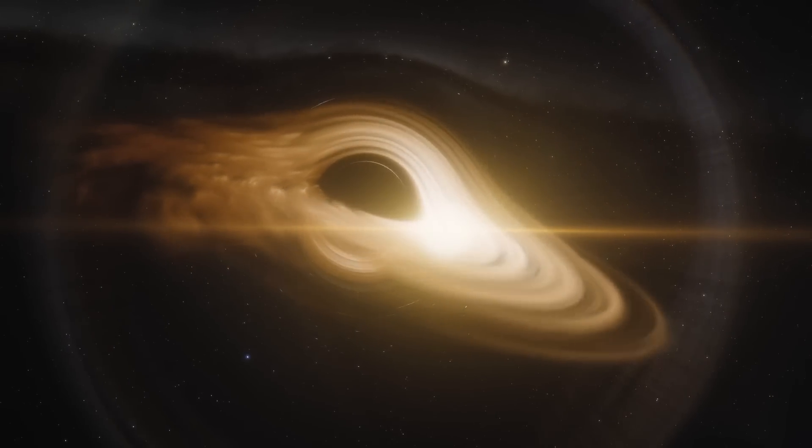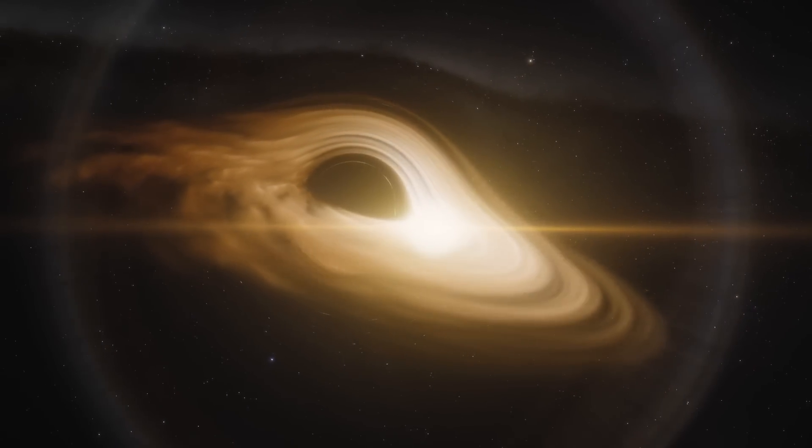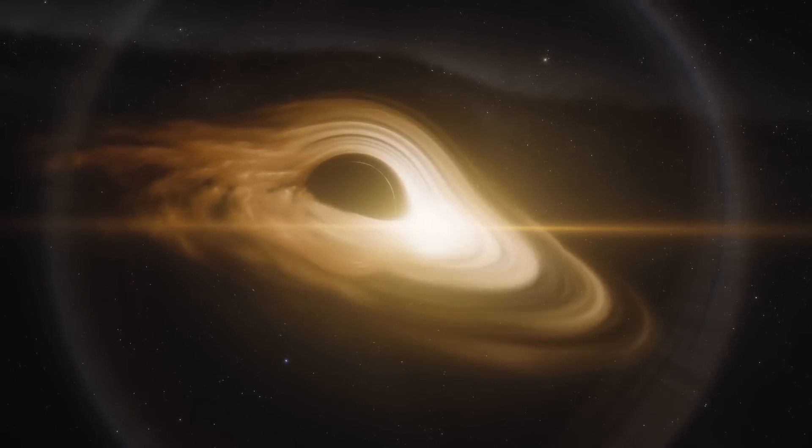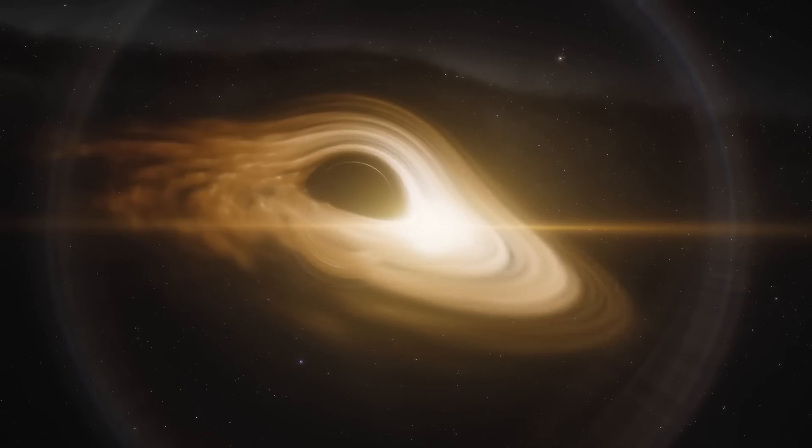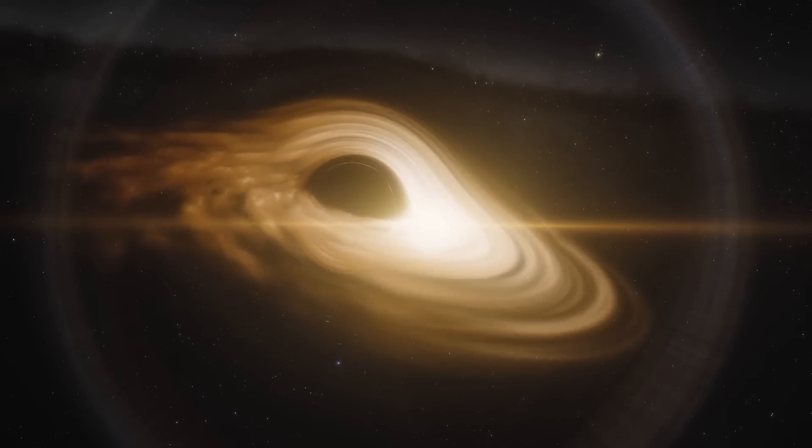Mini Jet Found Near Milky Way's Supermassive Black Hole. At the centre of our galaxy, the Milky Way, there is a supermassive black hole. Occasionally, this black hole, called Sagittarius A-star, shoots out a mini-jet into space.